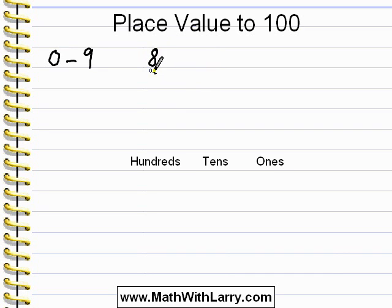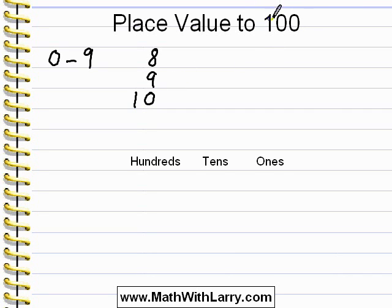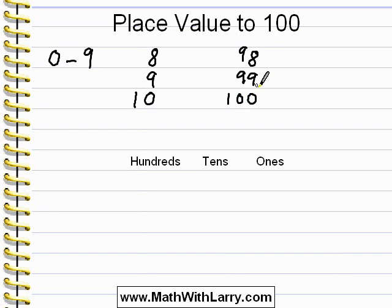For example, we can count 8, 9, and we can't squeeze the 10 into one column, so we have to start a new column for the 1. When we get as high as 100, we have to move to the left yet again and make a new column. We could have 98, 99, and then when we need to get to 100, we must start a new column. That's what the base 10 math system is all about.